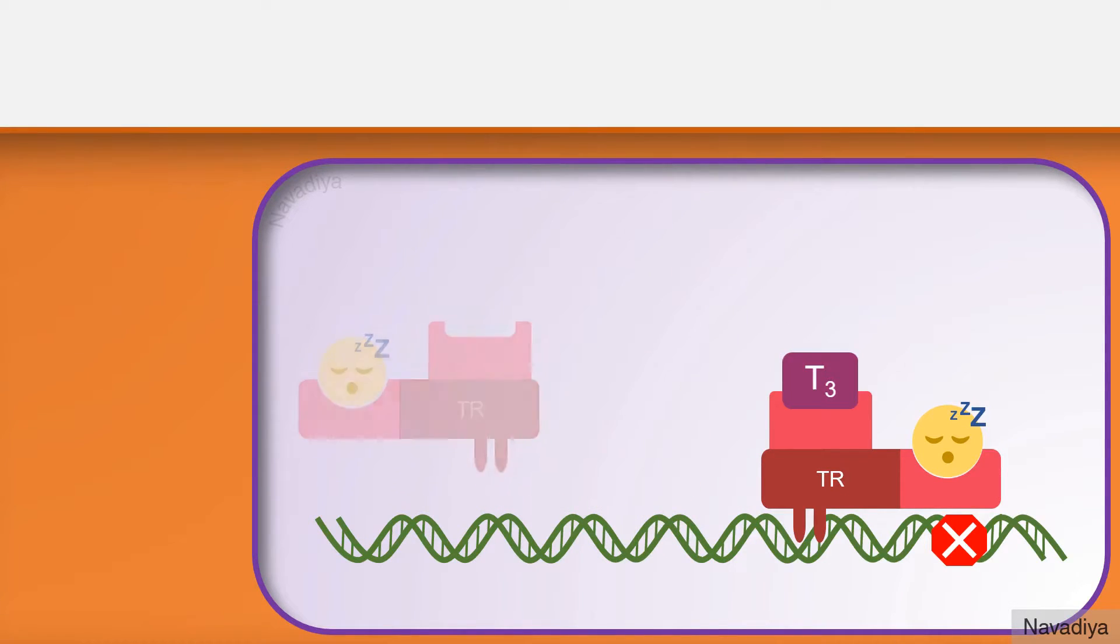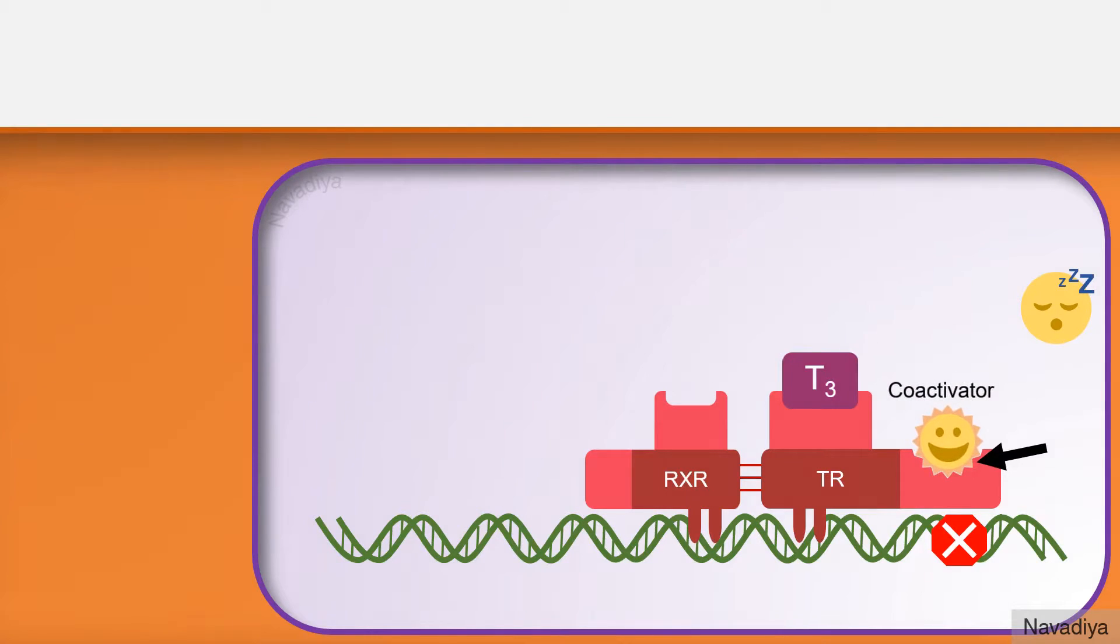Now this binding separates thyroid hormone receptors and causes binding with retinoid X receptor thus forming a heterodimer. It also causes conformational changes in the receptor. So now corepressor is released and coactivator binds here.